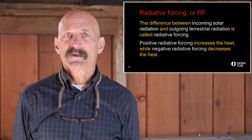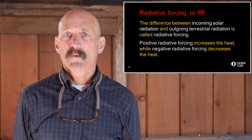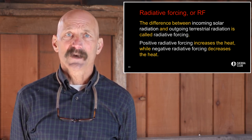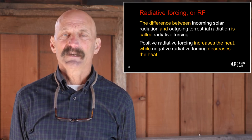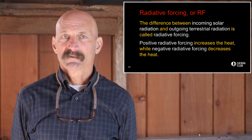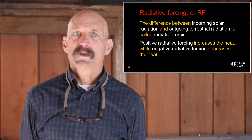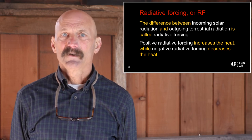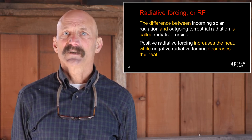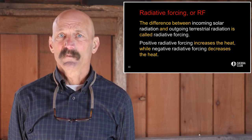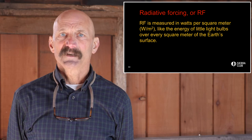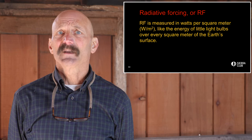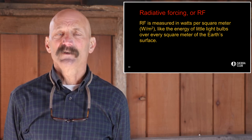The problem now is that the Earth's energy balance has been thrown out of whack by human-caused climate pollutants that have trapped some of the outgoing radiation, resulting in a net increase in radiative forcing. In response, the whole climate system is forced to adjust, seeking a new equilibrium level with increased heating, which results in the devastating climate impacts that we are now witnessing. Radiative forcing is measured in watts per square meter — like the energy of little light bulbs over every square meter of the Earth's surface.